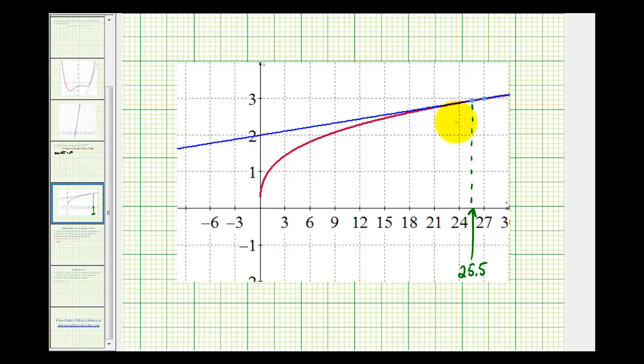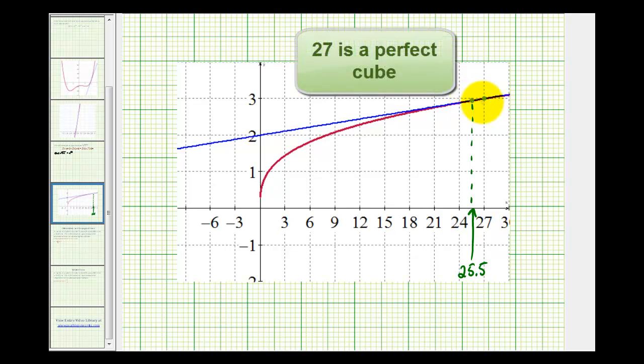We're trying to approximate the function value at x equals 25.5 as we see right here. But 25.5 is not a convenient value to substitute into the cube root function. However, notice how 27 is, and it's very close to 25.5.